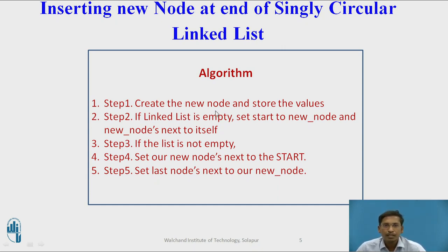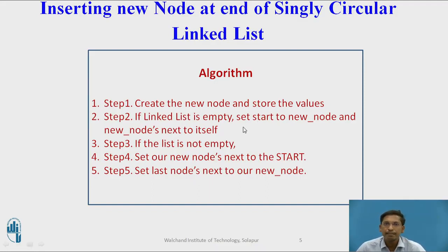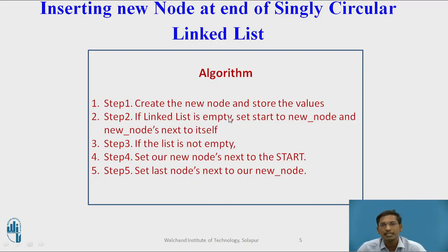Step 2: if the linked list is empty, set the start value to the new node and the new node's next part will point to the same node. If the linked list is empty, meaning no nodes are present previously, whatever new node you are inserting at the end will become the singly circular linked list. Set the start value to the new node and the new node's next pointer will hold the address of the same node.